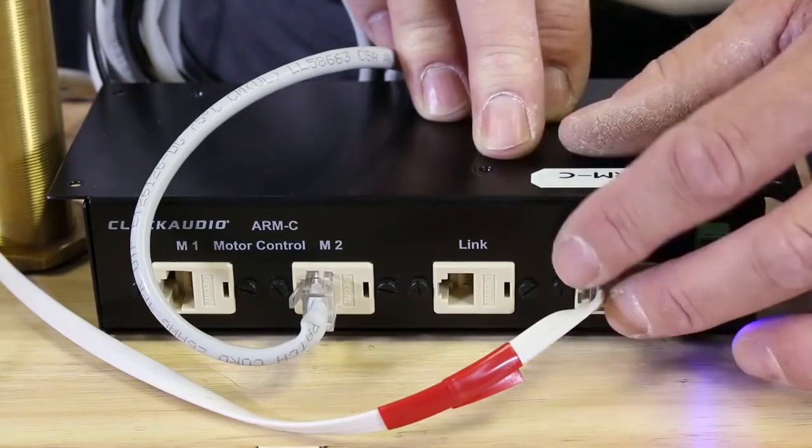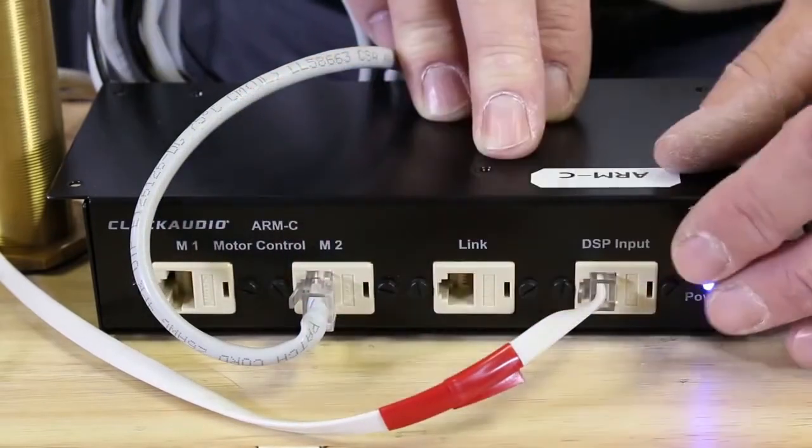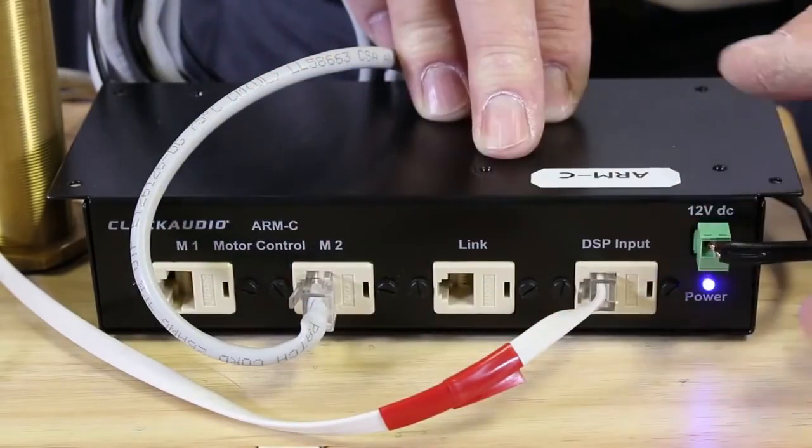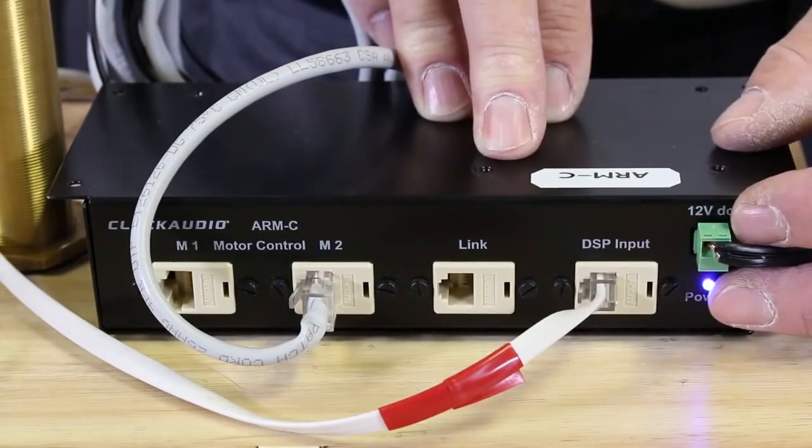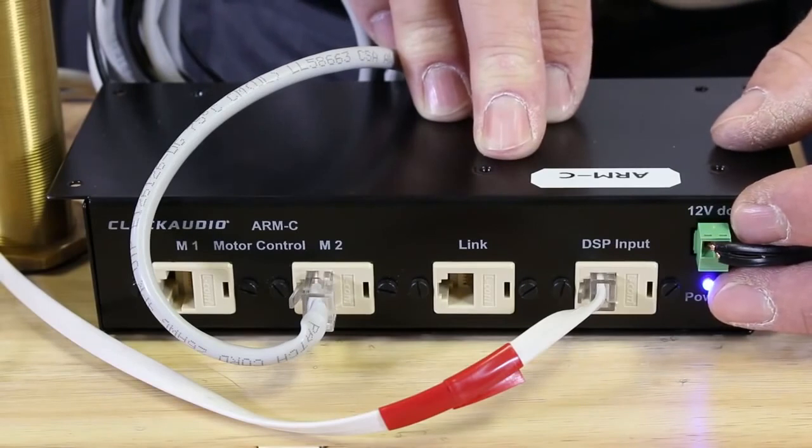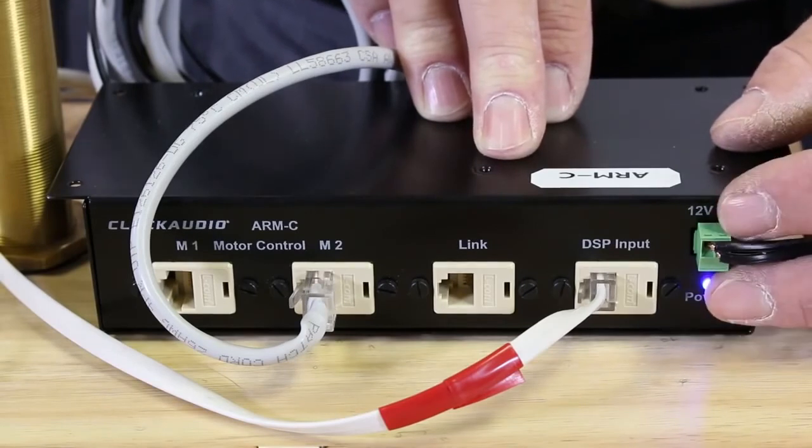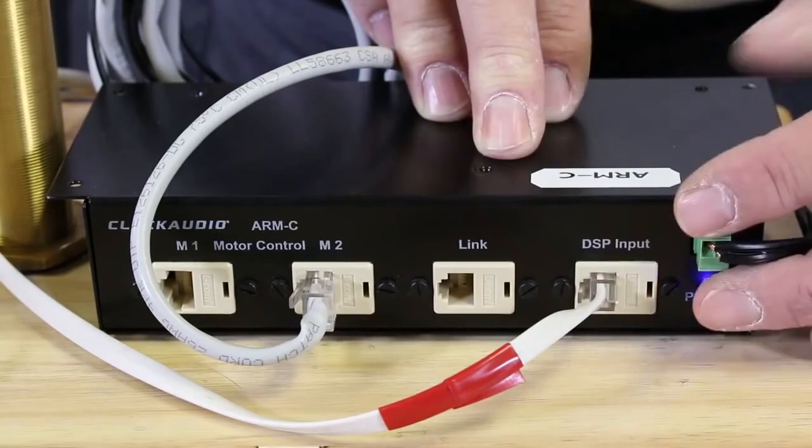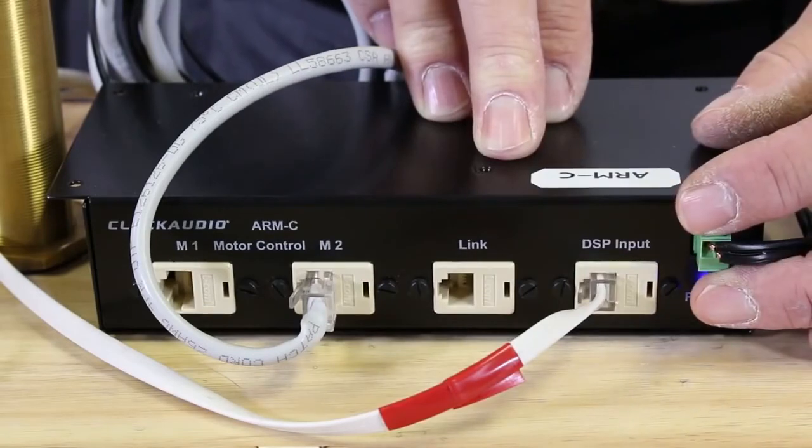It's also important that when you're making connections into the unit, you should disconnect the 12 volts, simply because the unit won't know what position the installed microphones are in. So it's important to make your connections, then attach the 12 volts.